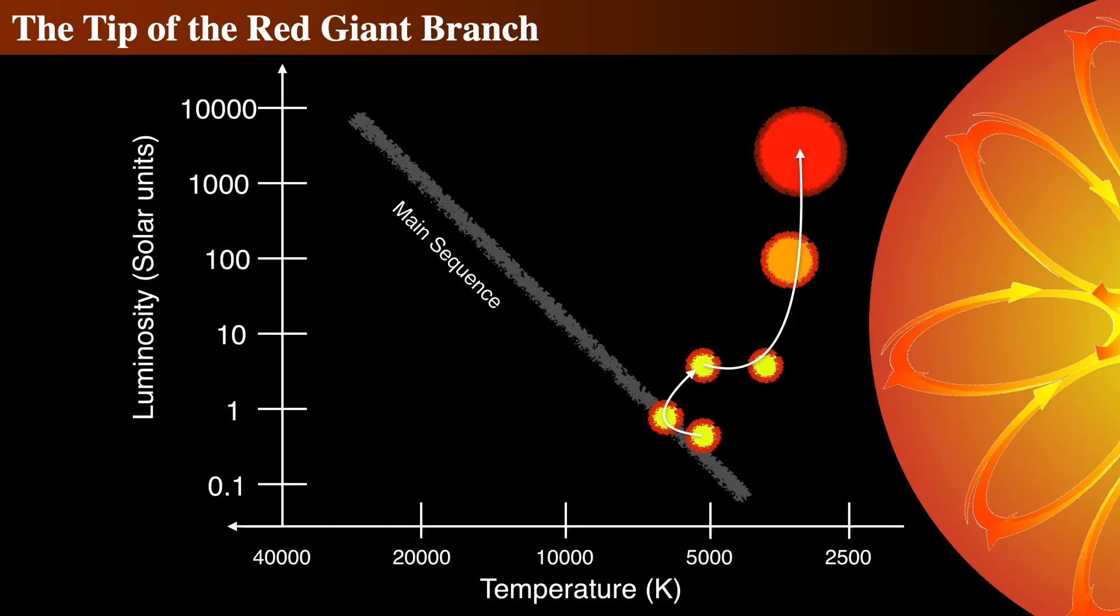After 600 million years of climbing the red giant branch, it reaches the tip. For the Sun's future, the photosphere has made a radical transformation. The outer envelope has expanded to over 160 times that of the current radius.